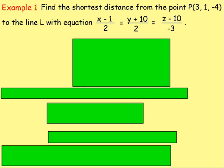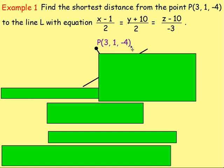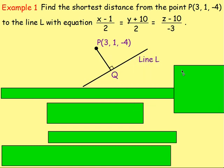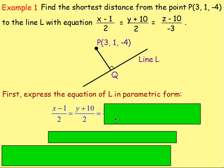Whenever you get one of these questions, what I like to do is draw it out. We're wanting the shortest distance from point P to a line, and we know that the shortest distance will be the distance that is at right angles to the line. First of all, what we do is take the equation of the line and express it in parametric form. So expressing it in parametric form, we will have x equals, y equals, and z equals, expressed in terms of some parameter.